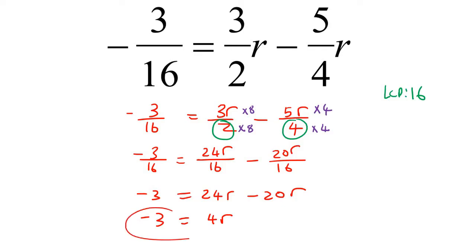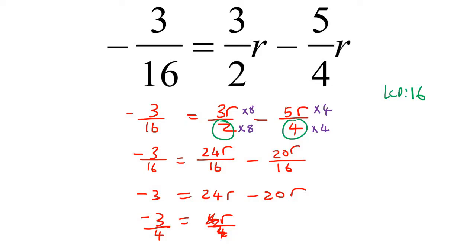Don't panic if 3 doesn't divide evenly by 4 — you just do the same thing as always. Divide this side by 4 and divide that side by 4. So R equals minus 3 over 4, and that's your answer. It cannot simplify further — there's nothing else you can do.